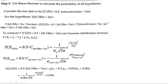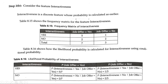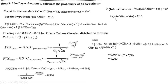The second parameter — P(interactiveness=yes | job offer=yes) — we already found as 5/7. The third parameter — P(job offer=yes) — is 7/10, since there were 7 yes instances out of 10 total. Multiplying all together: 0.594 × (5/7) × (7/10) = 0.297. So the probability for the test data to receive a job offer is 0.297.